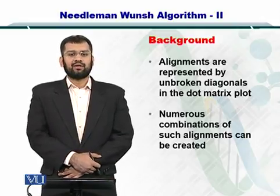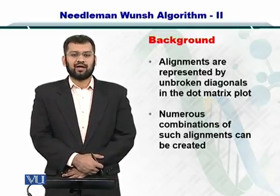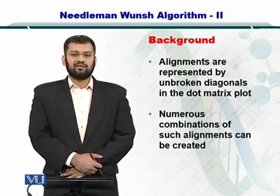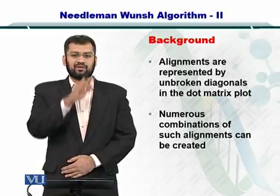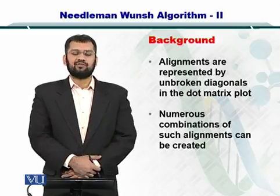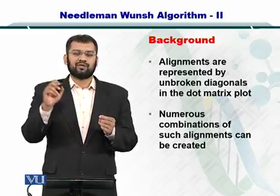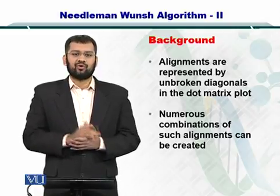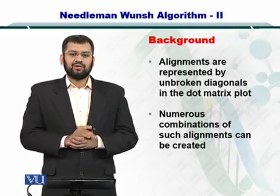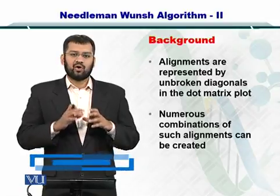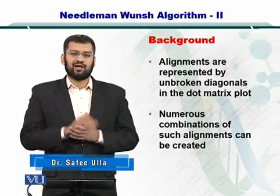You already know that in the dot matrix alignment diagrams, the diagonals represented alignments between the top and the left sided sequences. And of course you could have multiple such alignments as we saw in our previous examples. So the point is, how to make an optimal combination of these alignments?